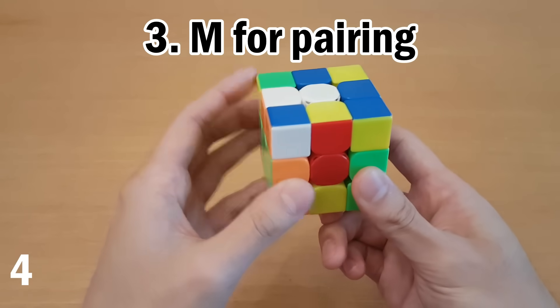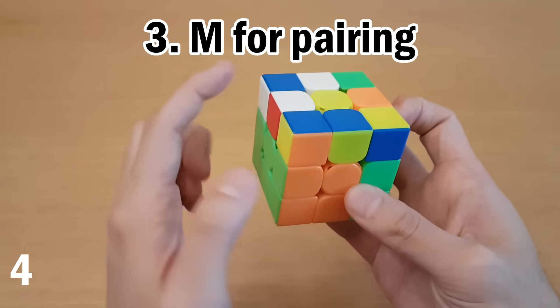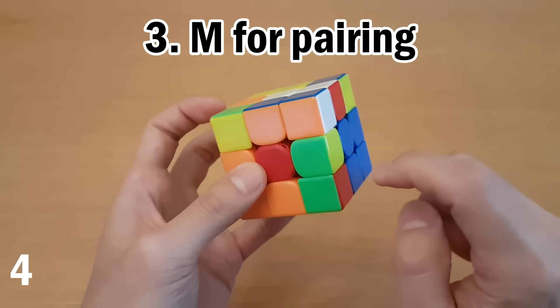Now, when we do M2, it pushes it to the back. So we're going to move this corner to the back as well, so they pair together. So that's going to be right here, and then push them together like that. And then all we have to do is insert it afterwards.